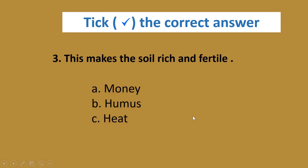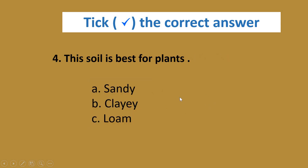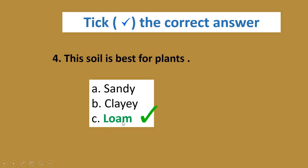Third: this makes the soil rich and fertile. The options are money, humus, and heat. The correct answer is humus. Fourth: this soil is best for plants. The options are sandy, clay, and loam. The correct answer is loam — it is the best soil for plants.